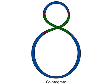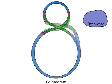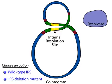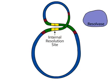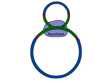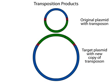The cointegrate is resolved into the original plasmid and the target plasmid by an enzyme called resolvase. The transposon contains a sequence called the internal resolution site, or IRS, which is necessary for resolution. Resolvase mediates a recombination event at the IRS. This yields the original donor plasmid and the target plasmid with a copy of the transposon.